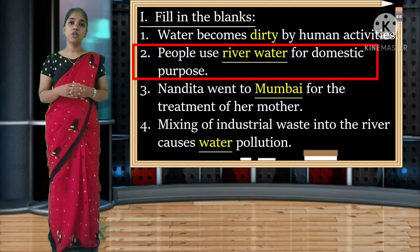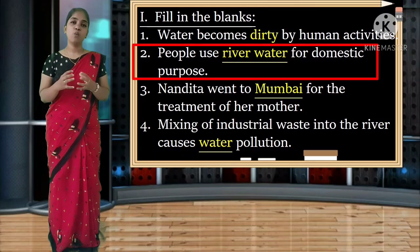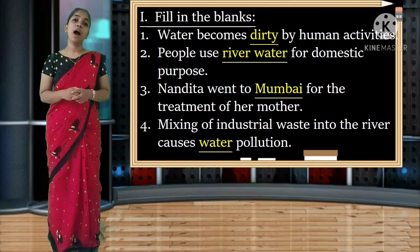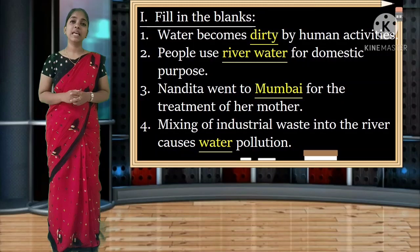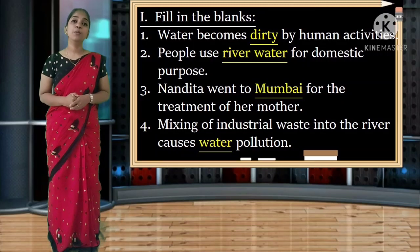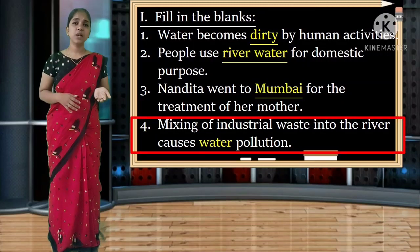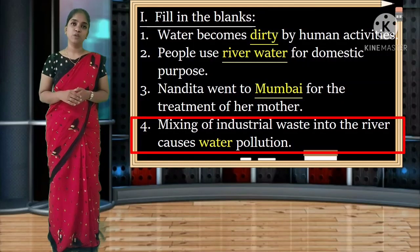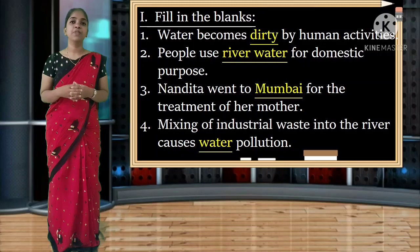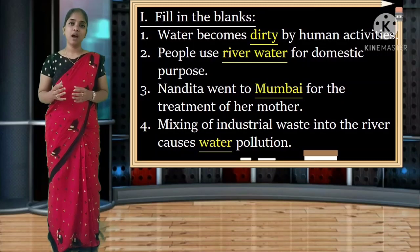Third: Nandita went to Mumbai for the treatment of her mother. Spelling: M-U-M-B-A-I. Fourth: mixing of industrial waste into the river causes water pollution. If industrial waste gets mixed with water, it will cause water pollution. The answer is water. Spelling: W-A-T-E-R.